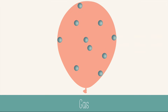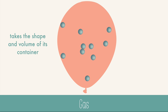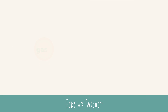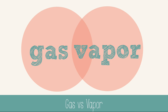Gases are the crazy particles. They have a much higher energy and are spaced farther apart, and can therefore take the shape and volume of their container. This means that a gas can fill any volume, and it can also be compressed to a smaller volume. The word gas and the word vapor are sometimes used interchangeably, but there is a difference. Gases are gases at room temperature, and a vapor is when something that is normally a solid or liquid at room temperature has become a gas. So when water evaporates, it becomes water vapor, not water gas.